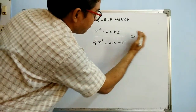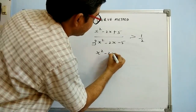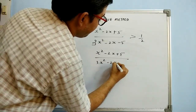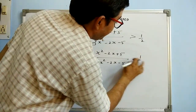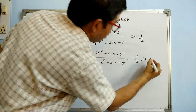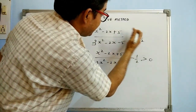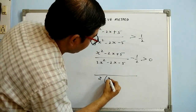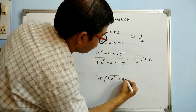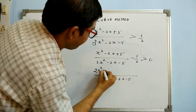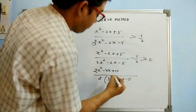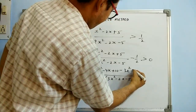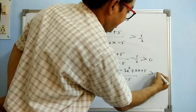Instead, bring everything to one side: write (x² - 2x + 5) / (3x² - 2x - 5) - 1/2 > 0. Make a habit of bringing terms to this side only. Then take the LCM: the combined numerator becomes 2(x² - 2x + 5) - (3x² - 2x - 5) = 2x² - 4x + 10 - 3x² + 2x + 5 ≥ 0.